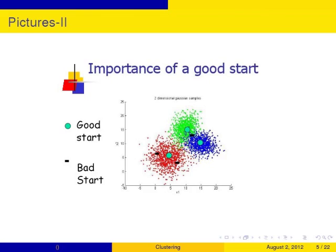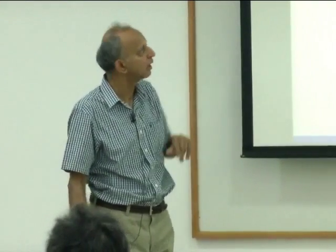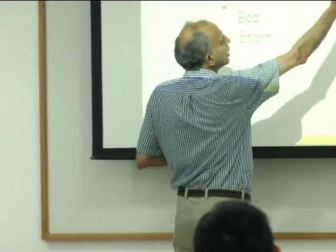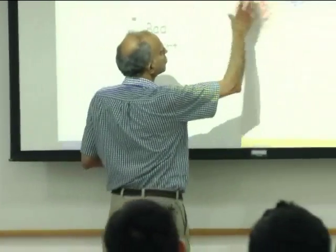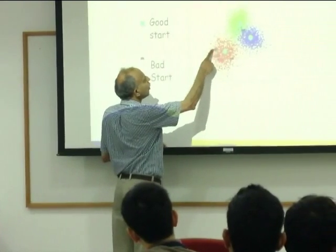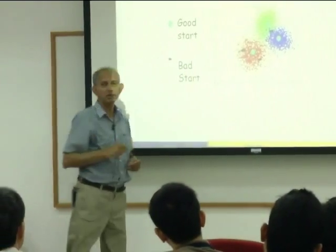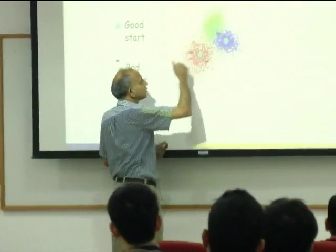If you start Lloyd's algorithm badly, you're sunk. Here's a simple example: there are three clumps of points that obviously should be in three clusters — red, green, and blue. If you happen to start with two of your starting centers inside one cluster and the other one between the two, that's a bad start. You can convince yourself that you'll never get out of that mess — you'll never get two different centers for one cluster and one for the other.